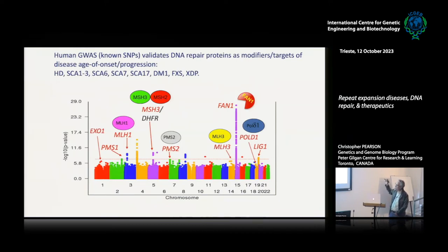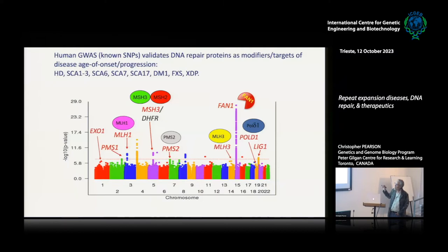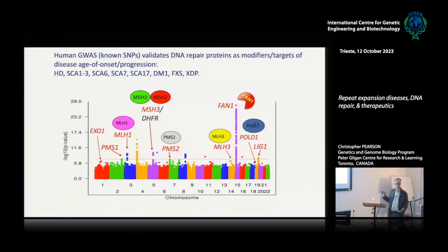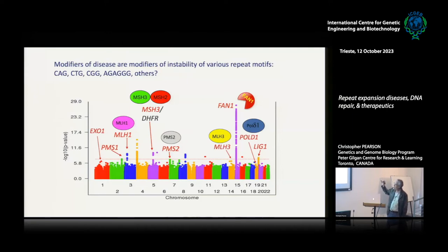Many of the DNA repair proteins identified in disease modifier screens are mismatch repair proteins — FAN1 and MSH3 prominently come up. MSH2 is critical for modulating repeat instability but didn't come up in modifier screens, probably because deleting it causes complete mismatch repair deficiency and either extreme tumor burden or lethality — the modifier screen can only pull up what it can see. FAN1 came up across multiple diseases; many of the same proteins were identified across different repeat sequences, which validates these as targets.